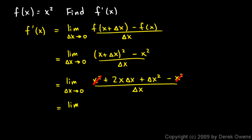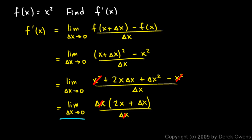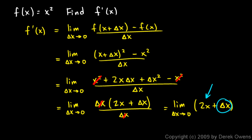So we get the limit as Δx approaches 0 of Δx(2x + Δx) / Δx. The Δx's cancel, and we're left with the limit as Δx approaches 0 of 2x + Δx. Clearly as Δx approaches 0, we're simply left with 2x. So the derivative of x squared is 2x.